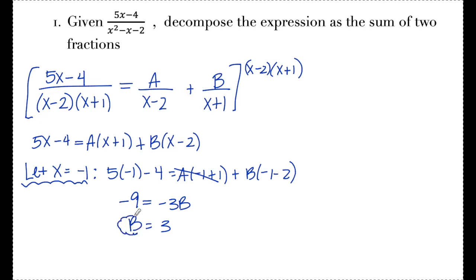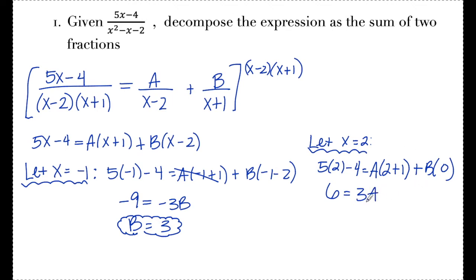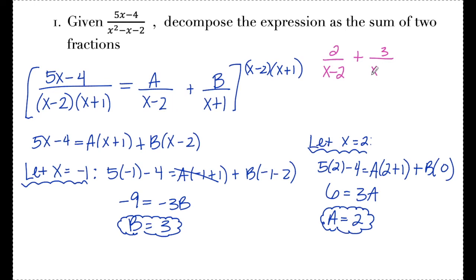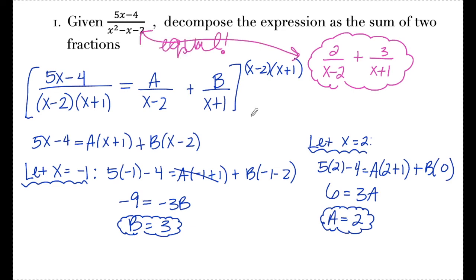Now I need to solve for a, so I'll choose x equals 2 to cancel the b term. Plugging in: 5 times 2 is 10, minus 4 is 6, equals 3a plus 0. Solving gives a equals 2. The last step is to plug a and b back in: the decomposition is 2 over x minus 2 plus 3 over x plus 1. This matches what we started with at the beginning of the example, confirming our decomposition is correct.